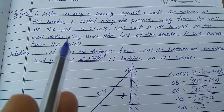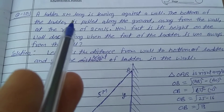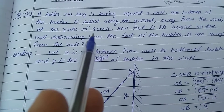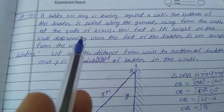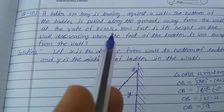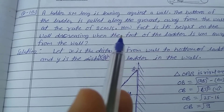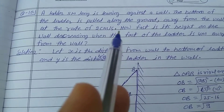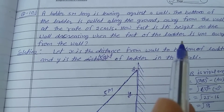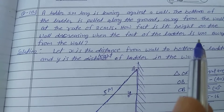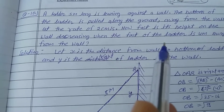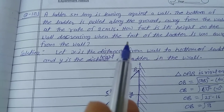The question means: the ladder height is 5 meters and is supported against the wall. The bottom of the ladder moves away from the wall at a rate of 2 cm per second — that is the given information. We need to find the rate of decrease of the height of the ladder on the wall when the ground length from the wall to the bottom of the ladder is 4 meters.